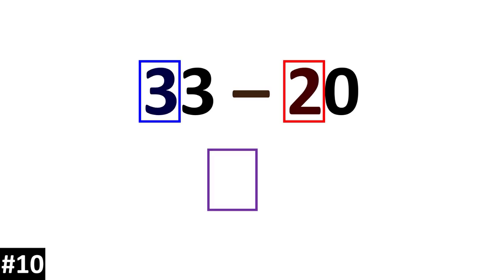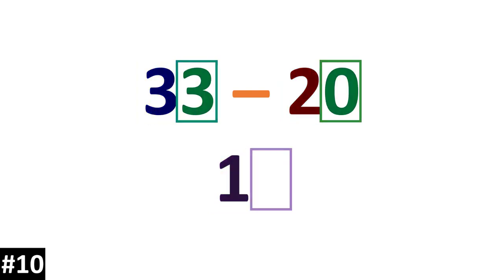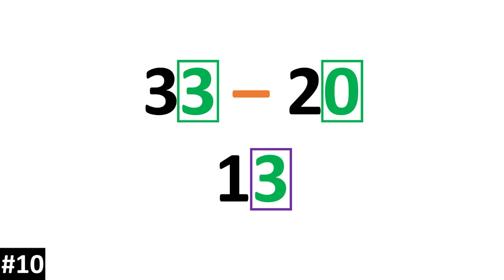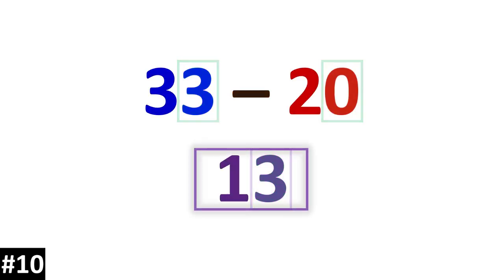33 minus 20. 3 10s minus 2 10s is 1 10. We look to the ones: 3 minus 0 is 3. So our answer is 13.